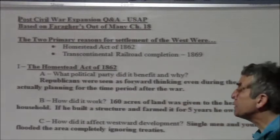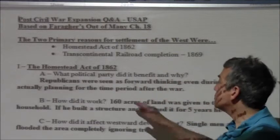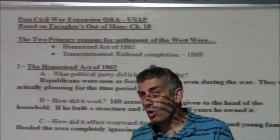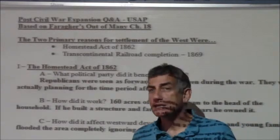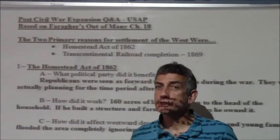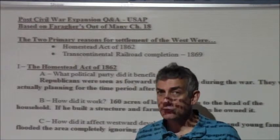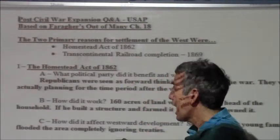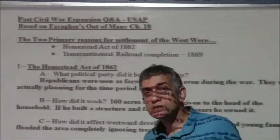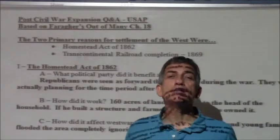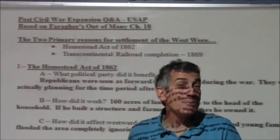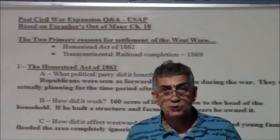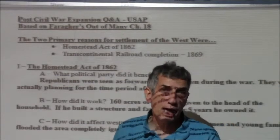How did the Homestead Act work? You got 160 acres of land for a registration fee — all you had to do was put a structure on it, live there for five years, and cultivate the land. That's a lot of land for free, and once the railroad was built it allowed people to get there very quickly. How did it affect westward development? Mostly single men and young families flooded the area. A lot of single men went out there, and then immigrant brides were shipped out to marry them.